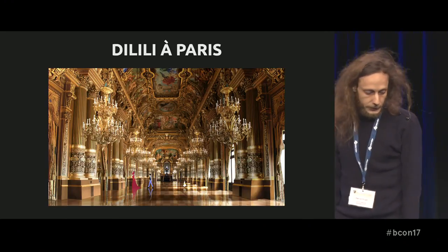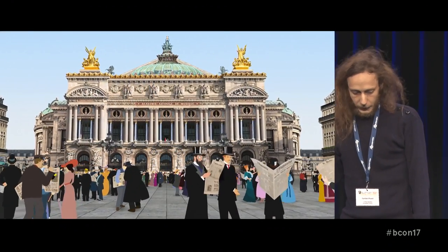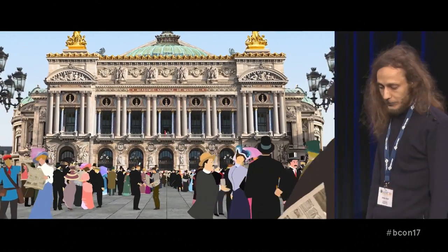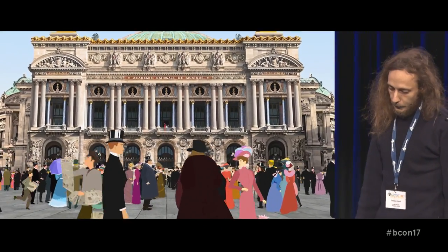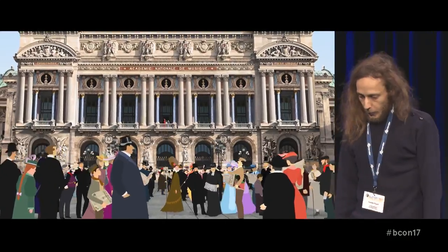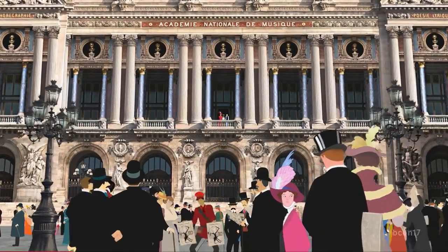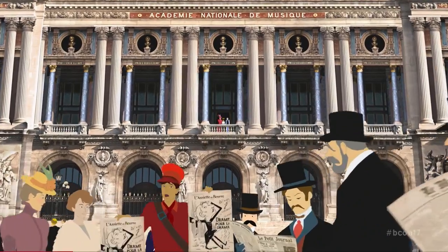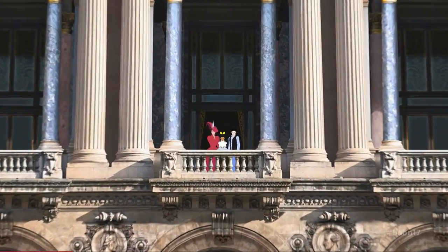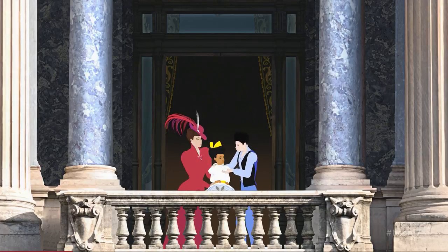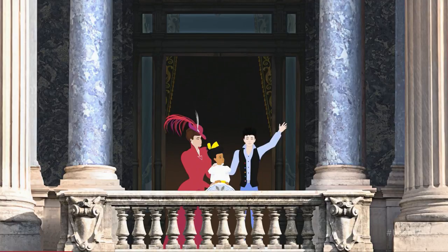This is the first shot that we made, jumping straight into it. All of these characters were animated in Blender. There are many of them — it's a big shot and it was kind of complicated to put it all together. This shot shows how useful it was to use Blender, because we have a 3D space, which is something that we just wouldn't have had easily if we had used 2D software for the animation.